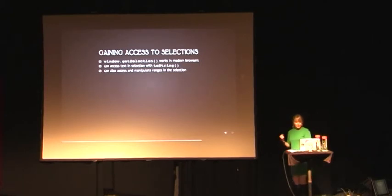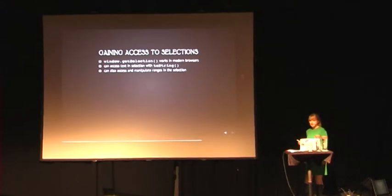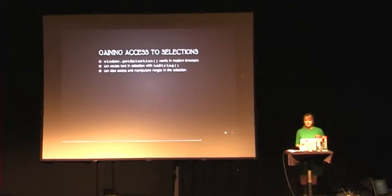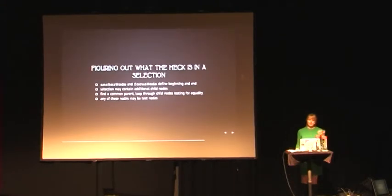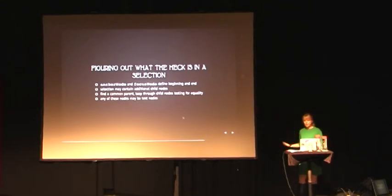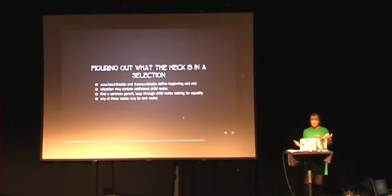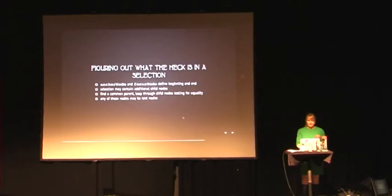Getting access to selections works great. You can use window.getSelection in all modern browsers. If you just want to see what's been selected, you can use toString on the selection object and get the text. You can also get access to all the ranges in the selection, which used to be how you manipulated selections. You usually don't just want the string — you want the nodes. You have the anchor node and focus node defining the beginning and end, and there may be child nodes within the selection. You need to find a common parent and loop through child nodes, testing for equality. Any of these nodes may be text nodes — in fact some probably are.